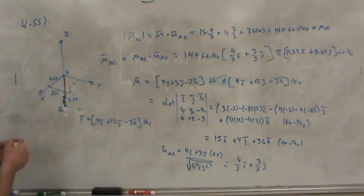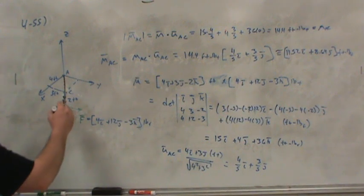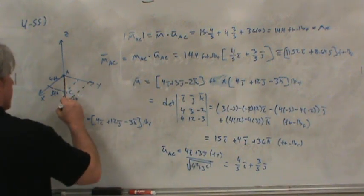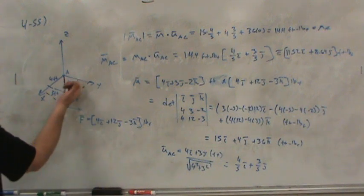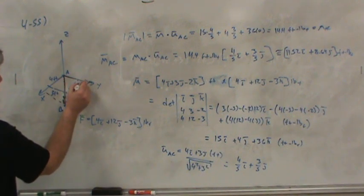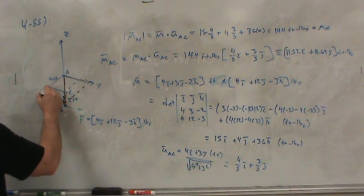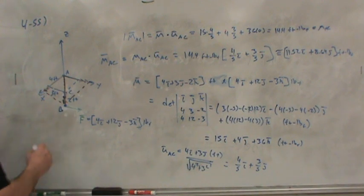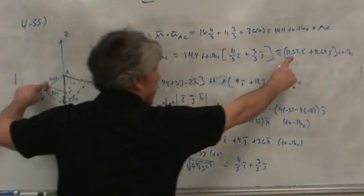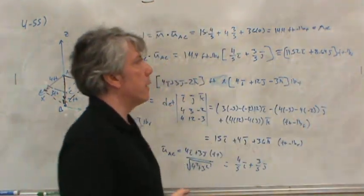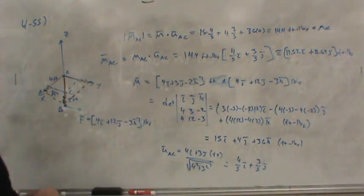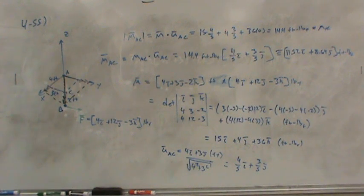We could even break up this vector into a twist along the Y direction and a twist along the X direction. Okay? And, of course, both of those would be positive components because here they are. In fact, the magnitude of this one would be right there, 11.52. The magnitude of this one, right there. Okay? There's more twist along the X direction than there is along the Y.